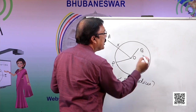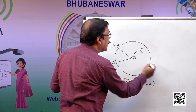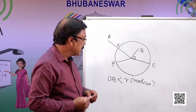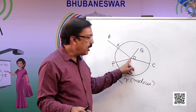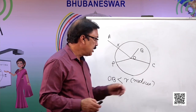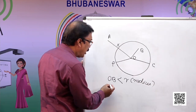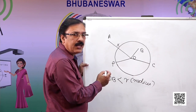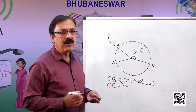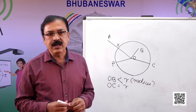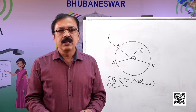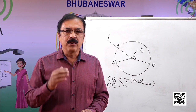If we put a point C on the circle, by the definition of radius, the distance between a point on the circle and the center is the radius. So OC equals the radius. Whenever the distance of a point from the center equals the radius, the point lies on the circle. We can thus mathematically determine whether a point is in the interior, on the circle, or in the exterior.